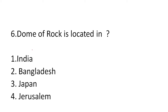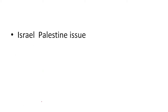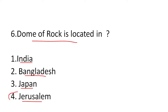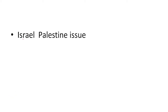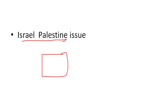The next question is: the Dome of Rock is located in — one: India, two: Bangladesh, three: Japan, or four: Jerusalem? The answer is four — Jerusalem. The Dome of Rock came up in the news because of the Israel-Palestine issue. There is a photograph of the Dome of Rock in newspapers, so sure-shot questions will come from this.